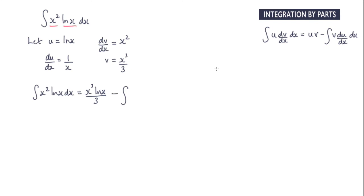Let me just write those separately. It's v which is x cubed over 3, that's multiplied by du by dx which is 1 over x. And if you notice, that x there will cancel with one of these which leaves me with x squared over 3. And that's with respect to x.